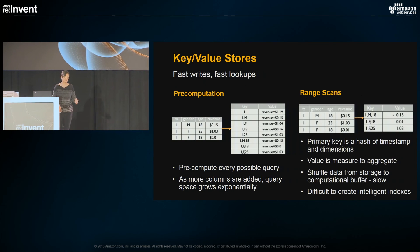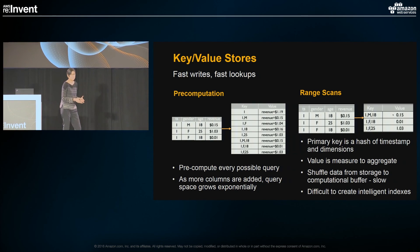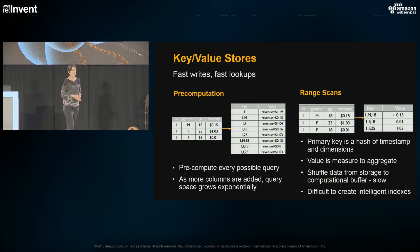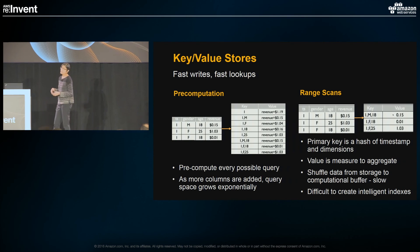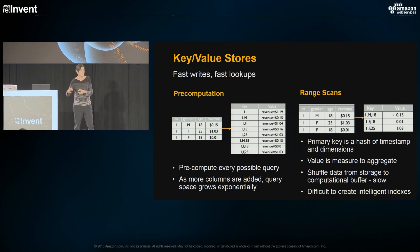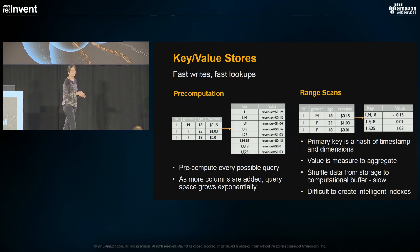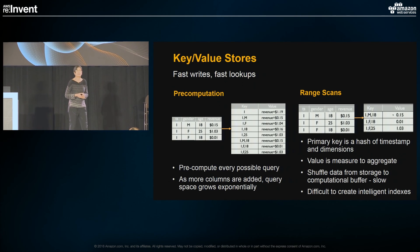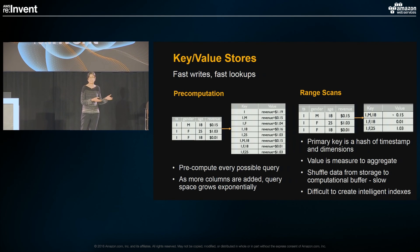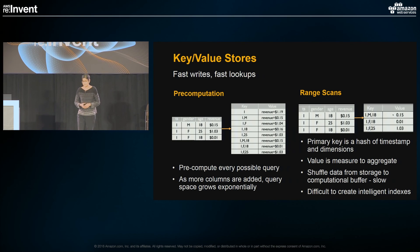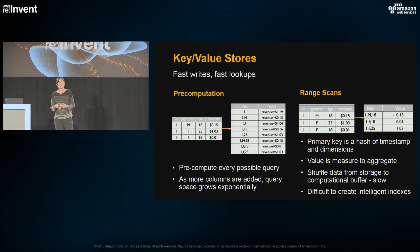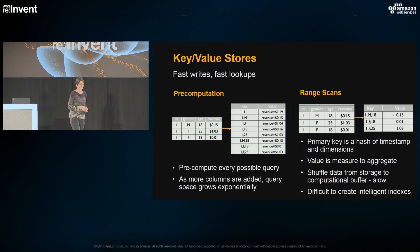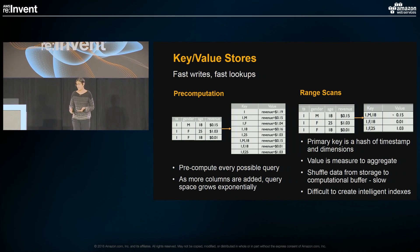The second pattern is range scans, where the primary key is a hash of the timestamp and the dimensions, and the value is the metric that you want to aggregate. Usually, you would shuffle data from where it is stored, pull it into an intermediate compute buffer where the numbers are crunched and the results are returned to the user. The shuffling of data — the scan — can be slow because it's difficult to add intelligent indexes to the primary key in key-value stores.